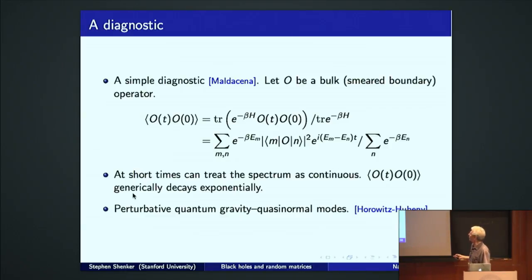With matrix elements, a Boltzmann factor, and phases that tell you about the time development. Now, at short times, we can treat the spectrum as a continuum. These matrix elements vary smoothly. And this two-point function generically decays exponentially. And we have an excellent understanding of this from the bulk gravitational point of view.